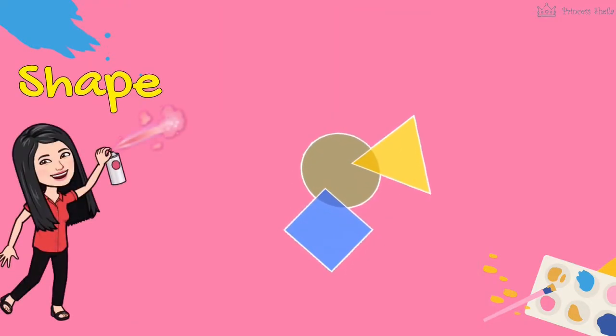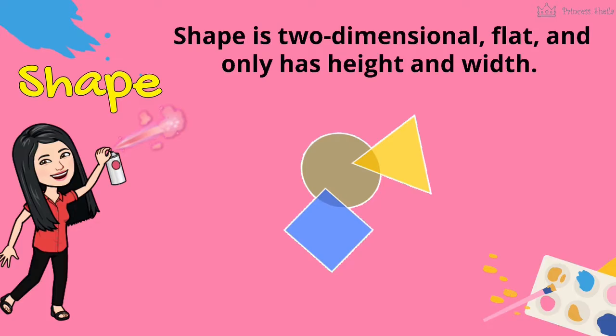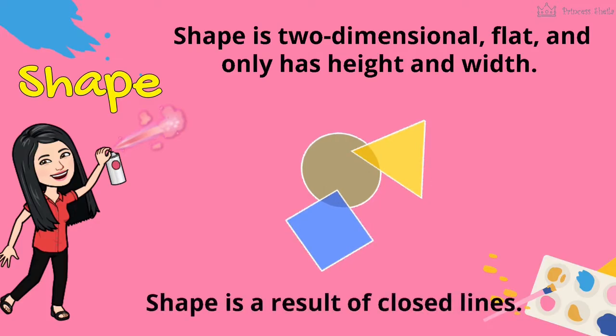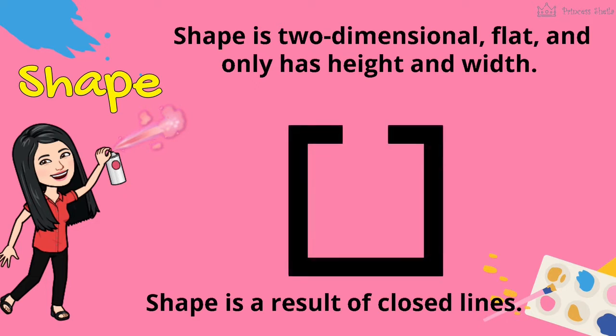Second is shape. Shape is two-dimensional, flat, and only has height and width. Shape is a result of closed lines.